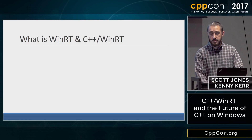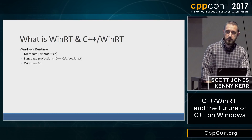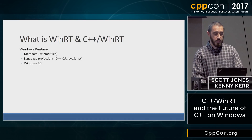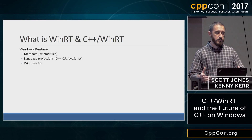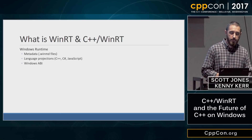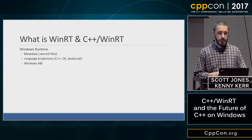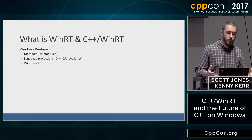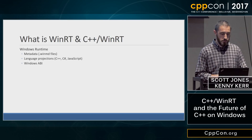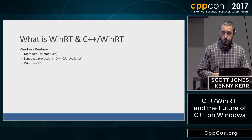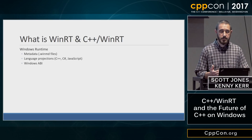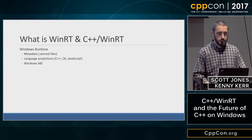What is C++ WinRT? The Windows runtime is really made up of three pillars: metadata, language projections, and the Windows ABI. The metadata is essentially the compile-time information — what does the API look like, what are the classes and methods? Language projections are the way we project that into a specific language in a language-specific way, because what is natural for C# isn't natural for C++ or JavaScript developers.